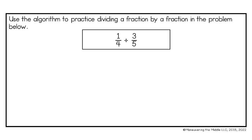Now let's practice dividing our fractions. I have 1 fourth divided by 3 fifths. I am going to start by keeping my first fraction, 1 fourth, change my symbol, and then flip my second fraction. So I have 1 fourth times 5 thirds. 1 times 5 is 5, and 4 times 3 is 12. Since 5 and 12 have no common factors, my final answer is 5 twelfths.